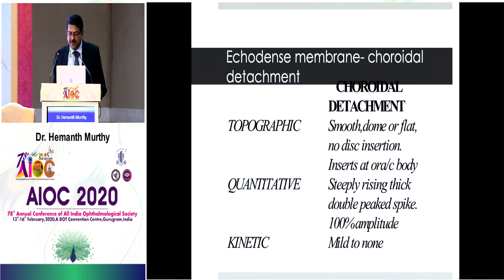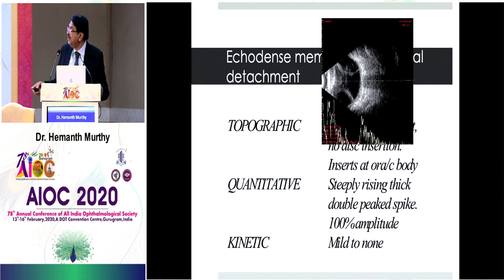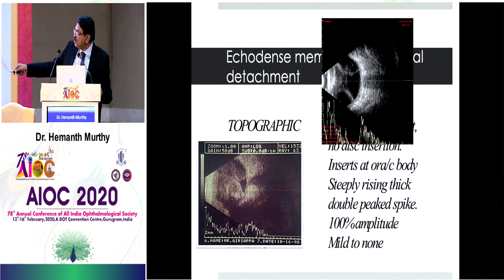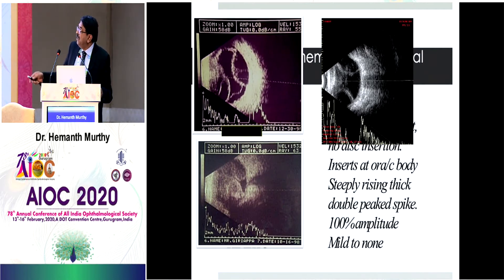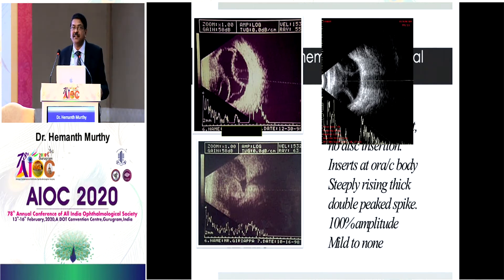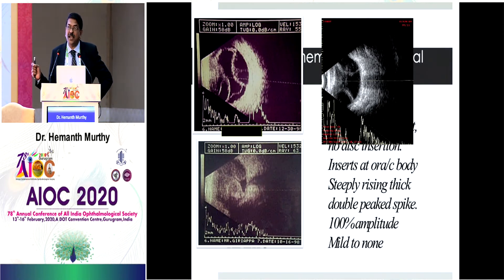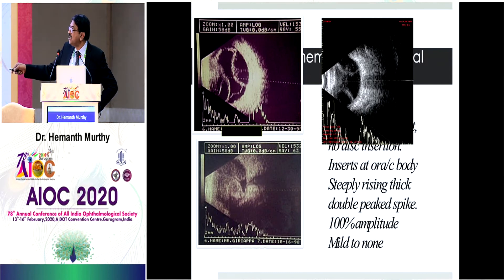Choroidal detachment is always dome-shaped without a convoluted appearance, with a steeply rising double-peak spike of 100% reflectivity and no after-movements. It never inserts at the disc, whatever the extent of the detachment. Even in expulsive hemorrhage with echoes in the suprachoroidal space, it never reaches the disc. In choroidal detachment you can also see the vortex vein as a visible structure — this is a clearly identifiable feature in the detachment.